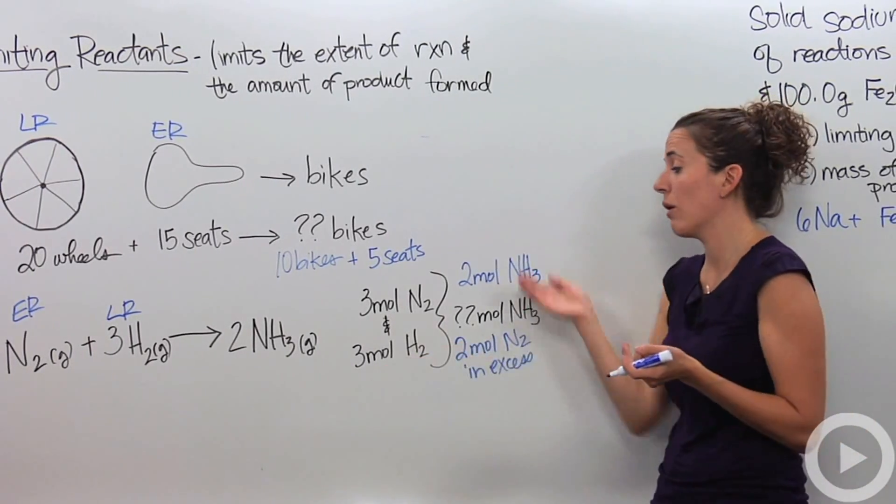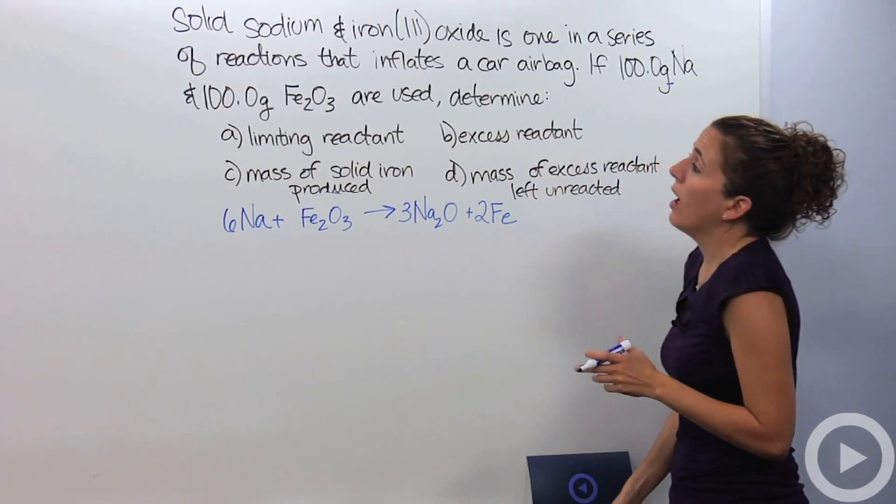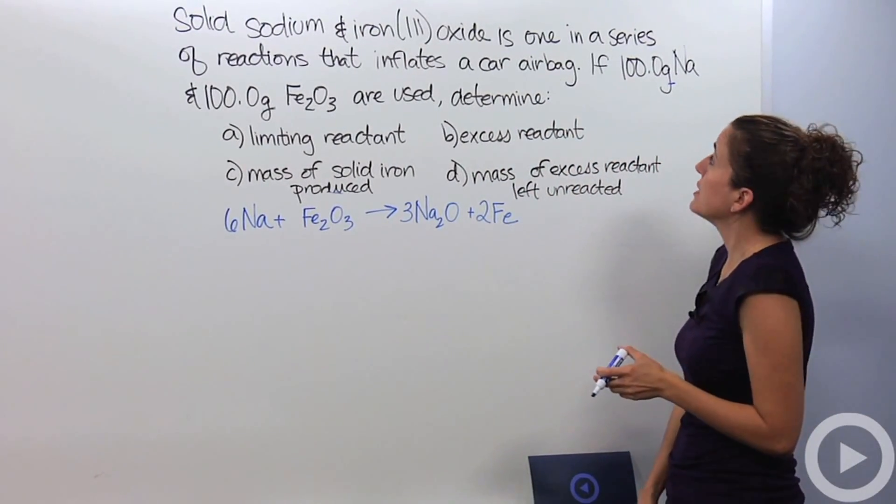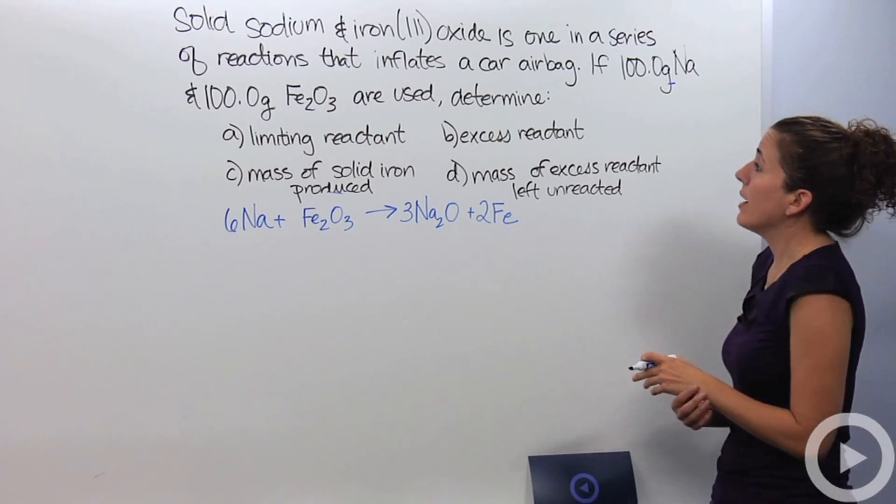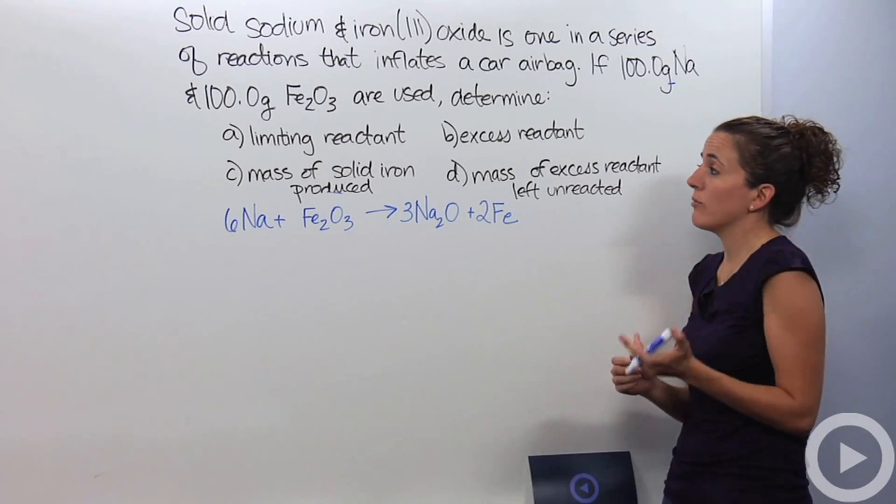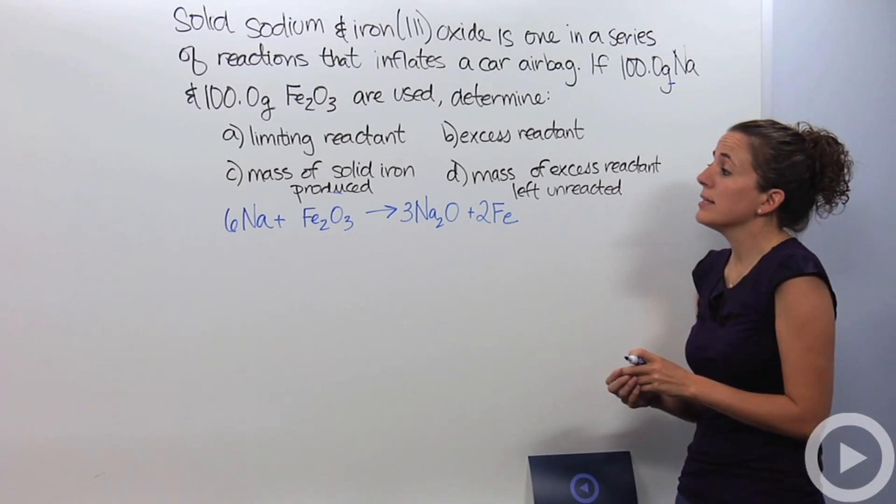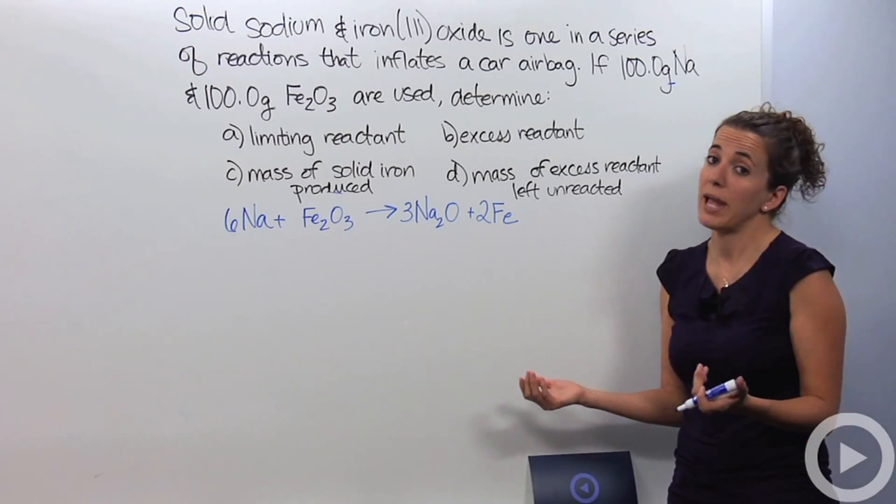Let's actually do a problem that incorporates all these concepts. Okay, solid sodium and iron three oxide is one in a series of reactions that inflates a car airbag. If 100 grams of sodium and 100 grams of iron three oxide are used, determine: A, the limiting reactant, B, the excess reactant, C, the mass of the product, and D, the mass of the excess, whatever is left over, of the reactants.